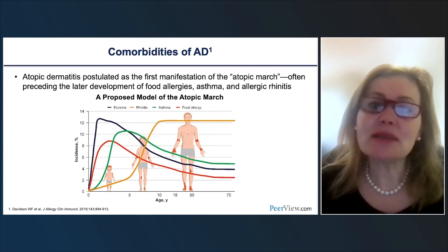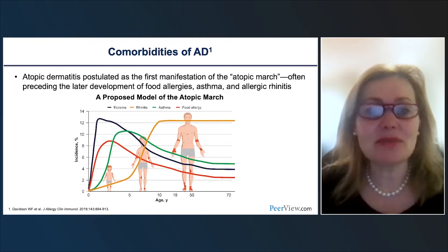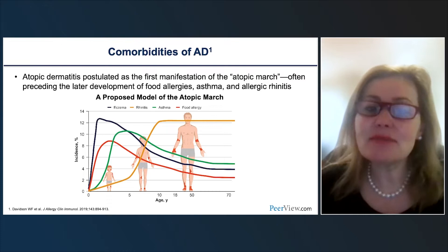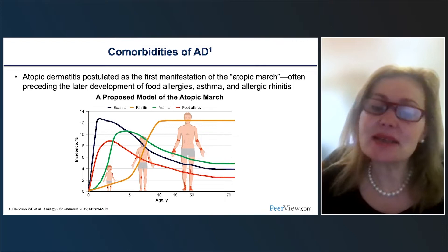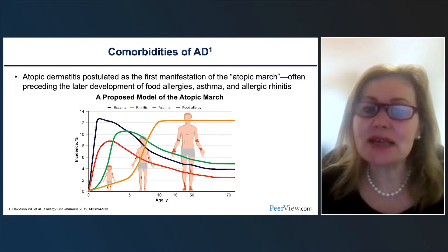When we consider atopic dermatitis, we need to think about the comorbidities of patients, primarily the atopic comorbidities. Atopic dermatitis is the first step in the atopic march. After AD starts, it is often followed by other atopic comorbidities such as food allergies starting around one year of age, followed by asthma and allergic rhinitis. Many times our patients will have more than one comorbidity.